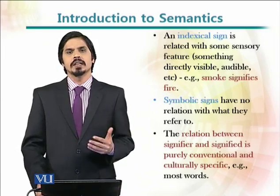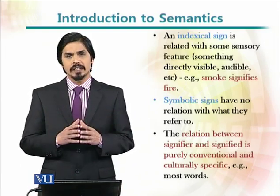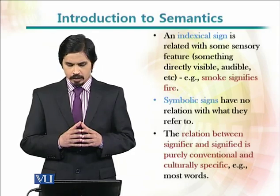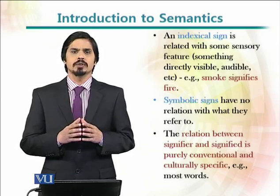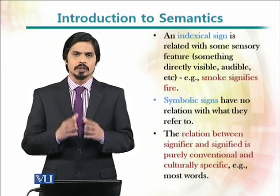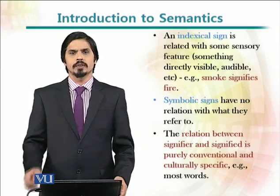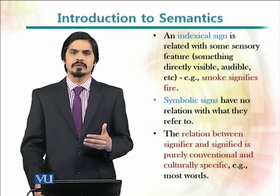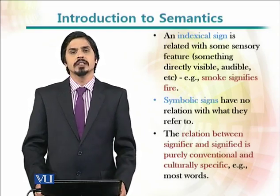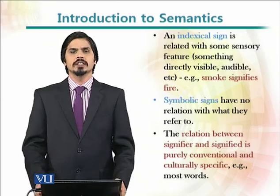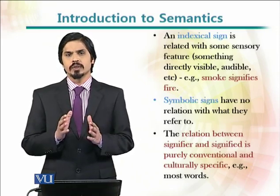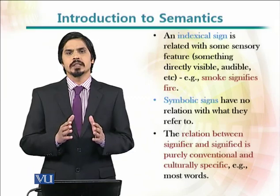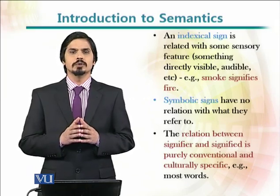Indexical signs are based on relatedness through some sensory feature, such as audibility or visibility. For example, smoke is considered a sign of fire — whenever we see smoke, we understand there is fire somewhere. Then we have symbolic signs, where there is no essential relationship between the word and the symbol. The relationship is only conventional, conveyed through various cultural norms and uses of the language.